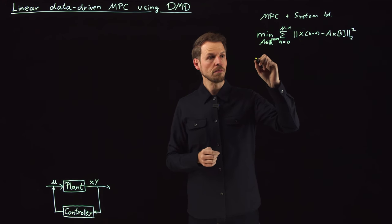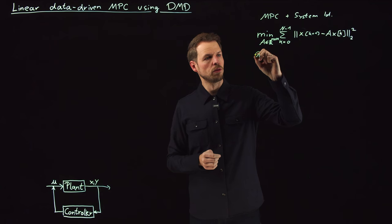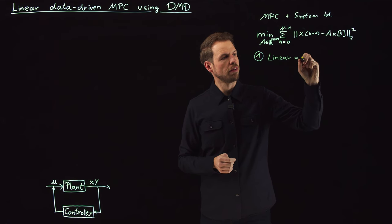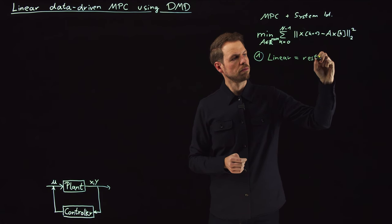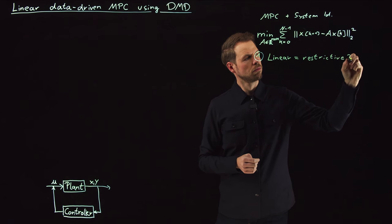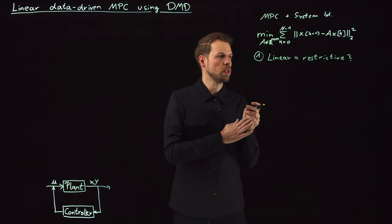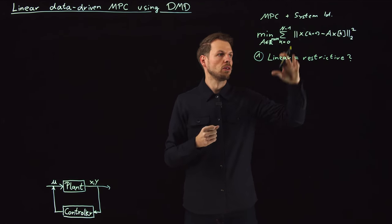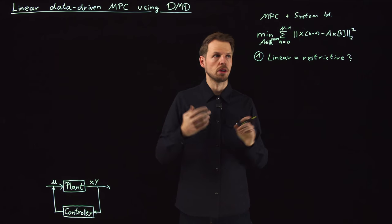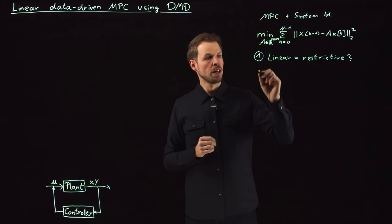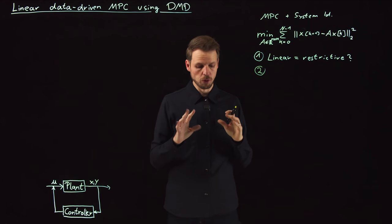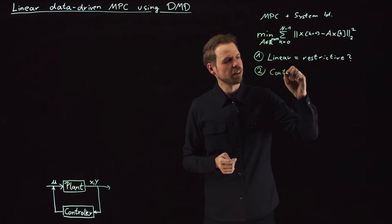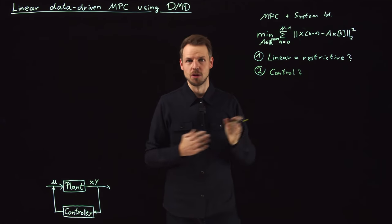Two problems remain. First of all, this was briefly discussed. Maybe the linear assumption is very restrictive. We don't know. Maybe it's useful. Maybe it's also simply not powerful enough, not versatile enough to model a highly complicated nonlinear system. Second problem that we have, and I guess this is more obvious, where's the control? So if you want to use this in a control setting, we need a control term obviously.